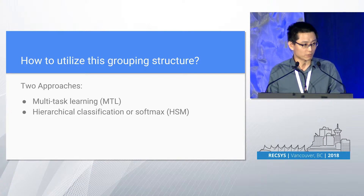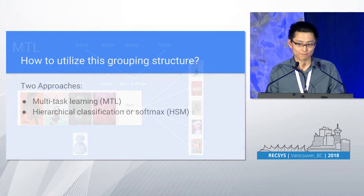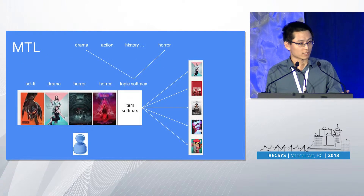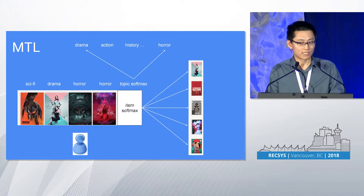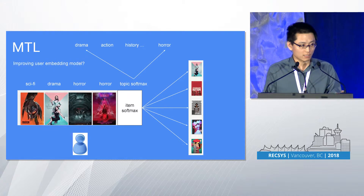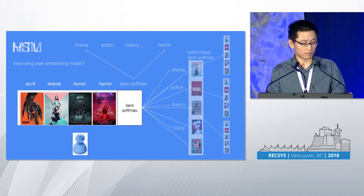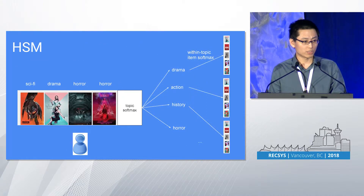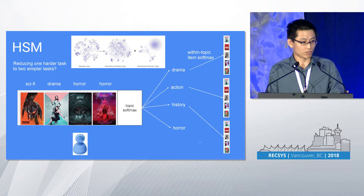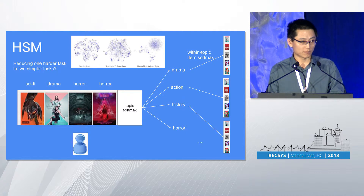Both tasks share the same user-level representation — sharing the bottom. The intuition is that we might be able to improve the user embedding representation. In the hierarchical softmax case, this is not parallel — it's sequential. We first make a prediction on the topic level with a topic-level softmax. Then, conditioned on our topic prediction — for example, drama — we do another prediction within that topic using an item-level softmax. The intuition is that we reduce one harder task into two simpler tasks.